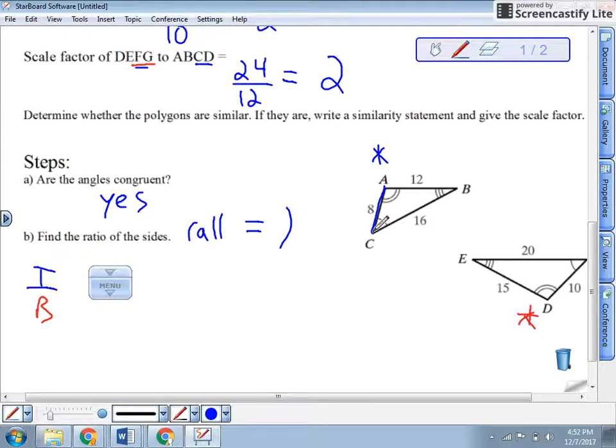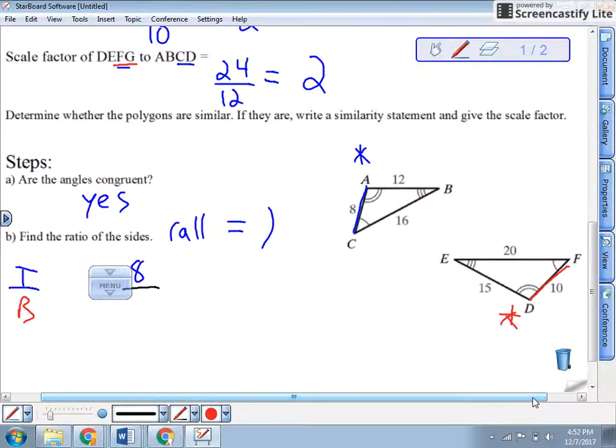So on the top, I put eight. Well, what does that compare to on the other triangle? Well, on the other triangle, the shortest side is 10 right here. So that's FD. So 8 over 10. Now, we always want to reduce that if we can. So 8 over 10, that reduces to 4 over 5. So every side better have that same ratio if it's going to be similar.